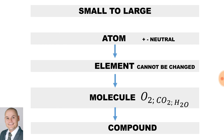If we take these and layer them from small to large: first we have the atom, which consists of a positive charge proton, neutral charge neutron, and negative charge electron. Then we have the element, which cannot be changed or reduced. Then we have the molecule, and finally the compound.